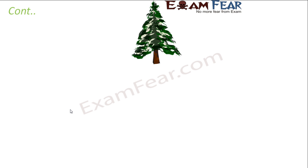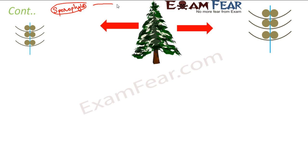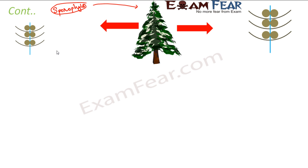Now let us look at the life cycle of a gymnosperm. The sporophyte is the dominant phase. The gymnosperm plant — the sporophyte — has both male cones and female cones. Inside the male cones is the male sporangium containing male spores (microspores), and inside the female sporangium, called the archegonium, are the female spores (megaspores). Antheridium is the name for the male sporangium.